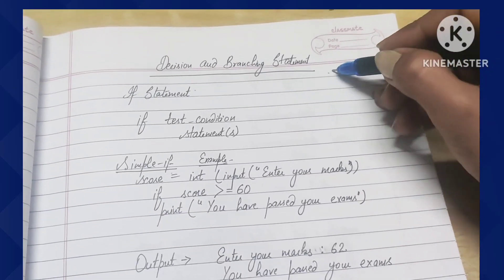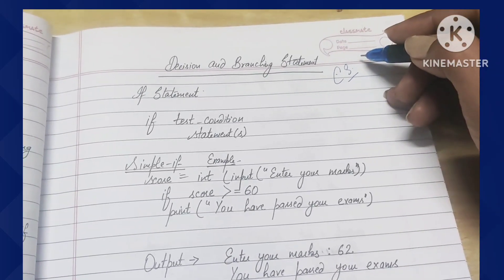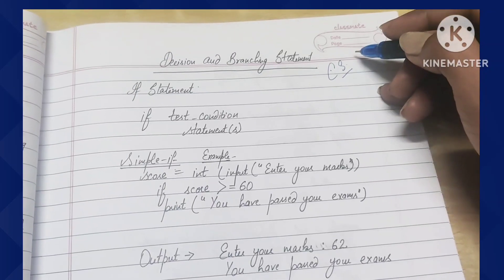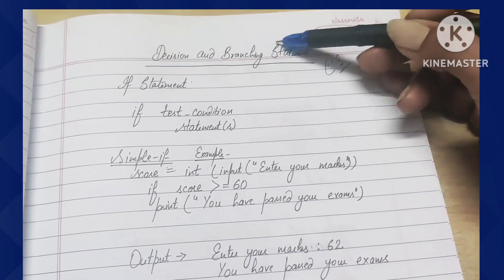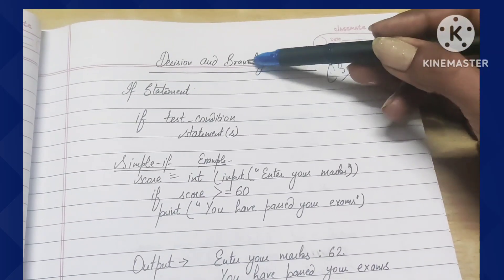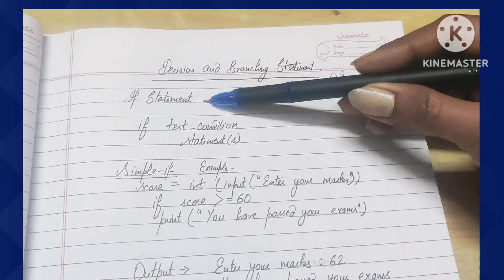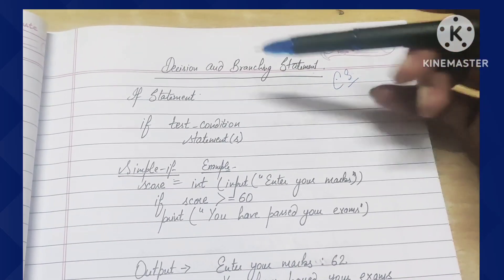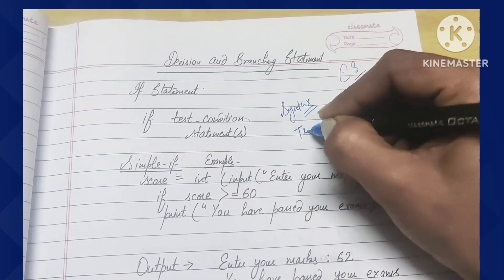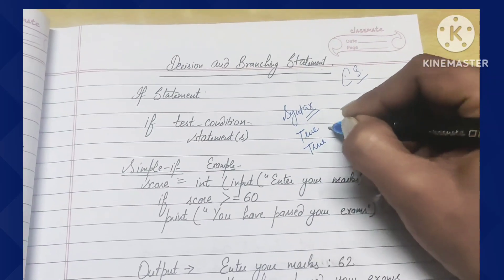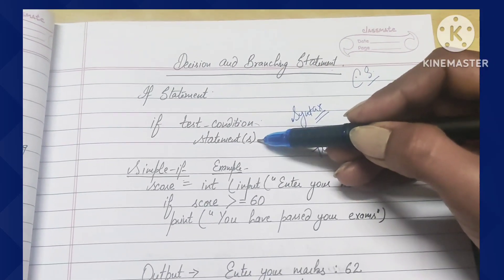This is the detailed part of the control statements. Those students who haven't seen the MCQ questions in the last video should kindly watch that first. In this part we will discuss decision and branching statements. The first decision and branching statement is the if statement. In a simple if, there is only one condition — it is only for the true value. A decision-making statement has a true part and a false part, but in the simple if there is only a single test condition and its statements.